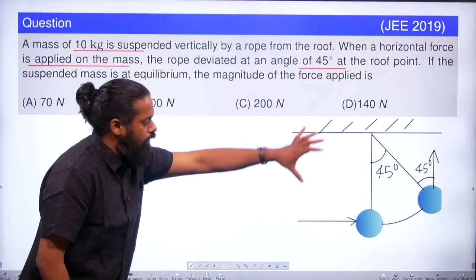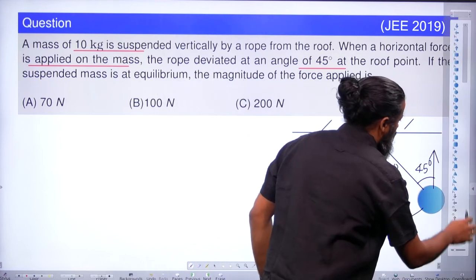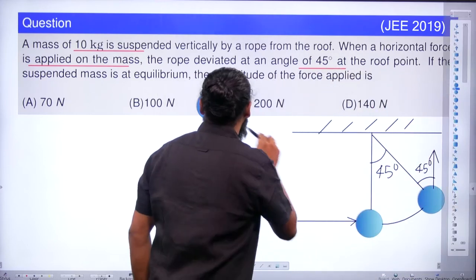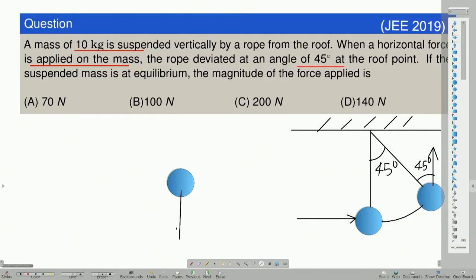Let us draw the free body diagram of that mass and apply the conditions of equilibrium. Taking that mass, in the downward direction the gravity force is acting, and the tension is acting at an angle of 45 degrees with the vertical. This is the tension on the string, making 45 degrees with the vertical.